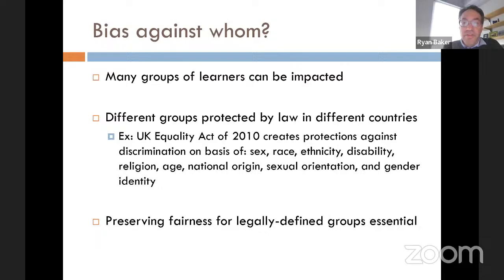For example, the UK Equality Act of 2010 creates protections against discrimination on the basis of sex, race, ethnicity, disability, religion, age, national origin, sexual orientation, and gender identity. Preserving fairness for these legally defined groups is essential.